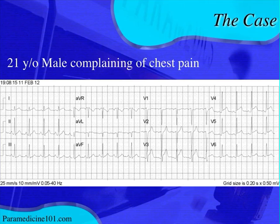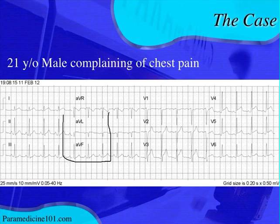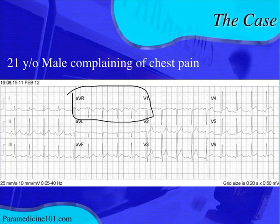Looking at the ECG, we're going to start out by interpreting the rate and rhythm. The rate looks like it might be a little bit fast. If you do your 300 box method, you can see it's almost about 100 beats per minute. The rhythm itself looks probably sinus — we see P waves, they're pretty much upright in all the limb leads and negative in AVR. You see a P wave with every QRS complex, so we can call this a sinus rhythm.